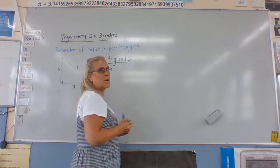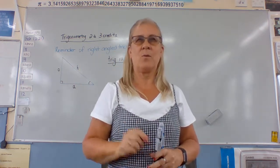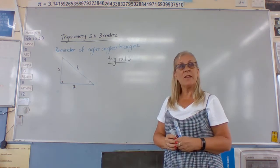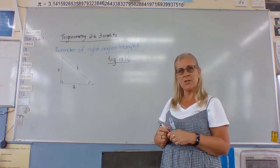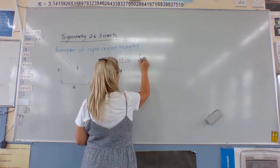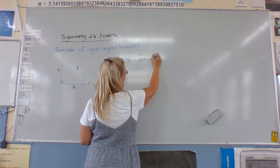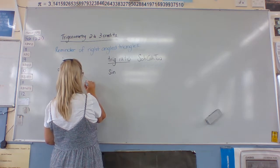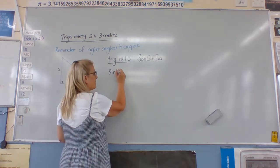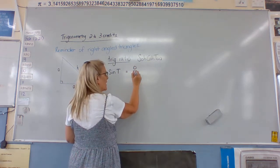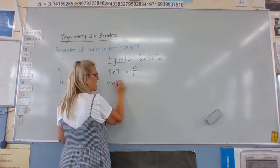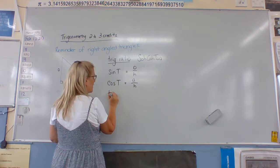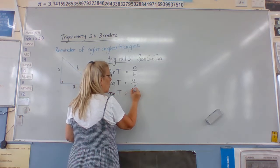What's a ratio? A fraction. That's why they're called trig ratios, because we write them as fractions. We know that from SOHCAHTOA: sine of the angle — I'm going to call it T — equals O over H. We know that cosine of the angle equals A over H. We know that tan of the angle equals O over A.